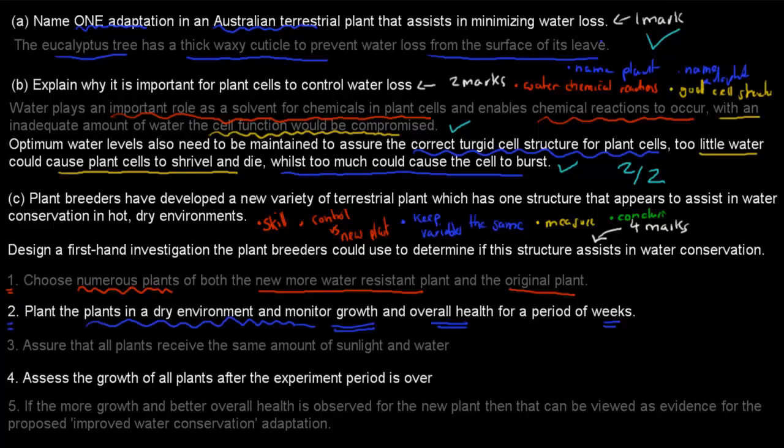So these plants will be planted in a dry environment. And what we do is we monitor the growth and the overall health for a period of weeks. So this is to make sure we can see if these certain new ones survive better than the old ones. That was point number two. And then three, we ensure that plants receive the same amount of sunlight and water. This was keeping those constant variables the same, which is really important when it comes to setting up experiments. Also, we obviously made sure we had that measurable one. So we assessed the growth of all plants over the period of the experiment. This is what we actually will determine if the plant has better adaptations, is how much it will grow.